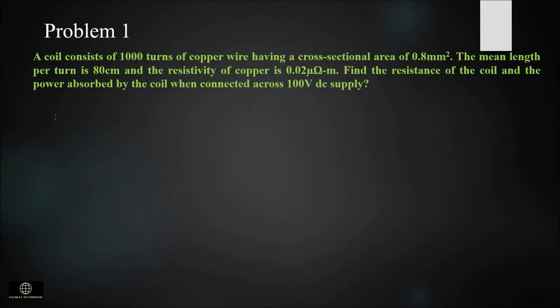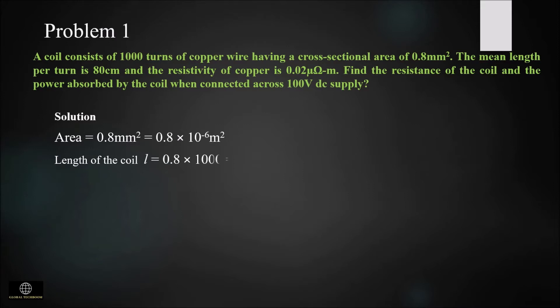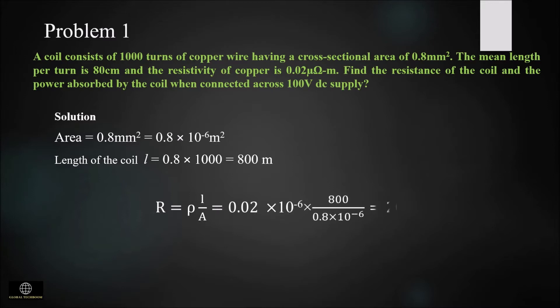In this problem the area and the length of the coil are given. Area is equal to 0.8 mm square, which we convert to 0.8 × 10⁻⁶ meter square. The length of the coil is 80 centimeter per turn, so it is 0.8 × 1000, which is 800 meter. To find the resistance we apply the equation R = ρL/A. By substituting the values we get the resistance value as 20 ohm.